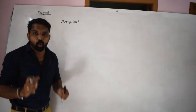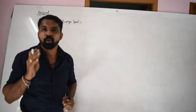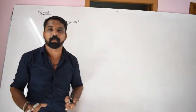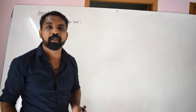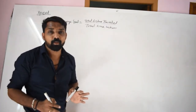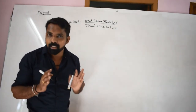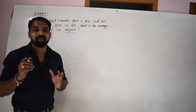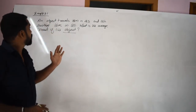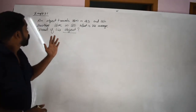Average speed is the ratio of total distance traveled to the total time. Total distance divided by total time equals average speed. Example 8.1: An object travels 16 meters in 4 seconds and another 16 meters in 2 seconds.